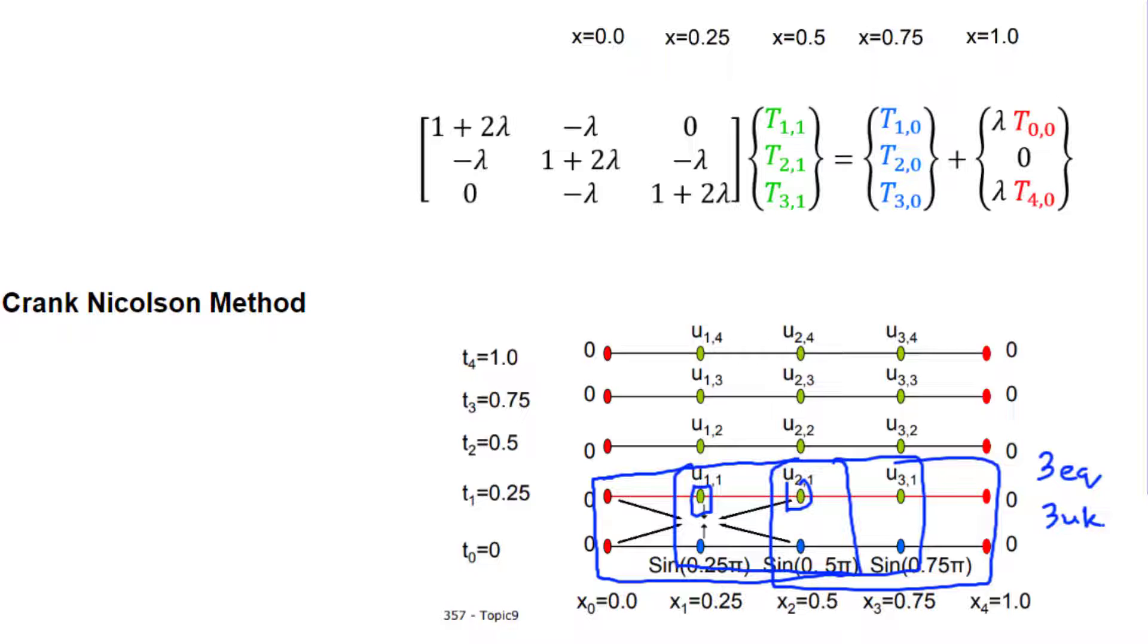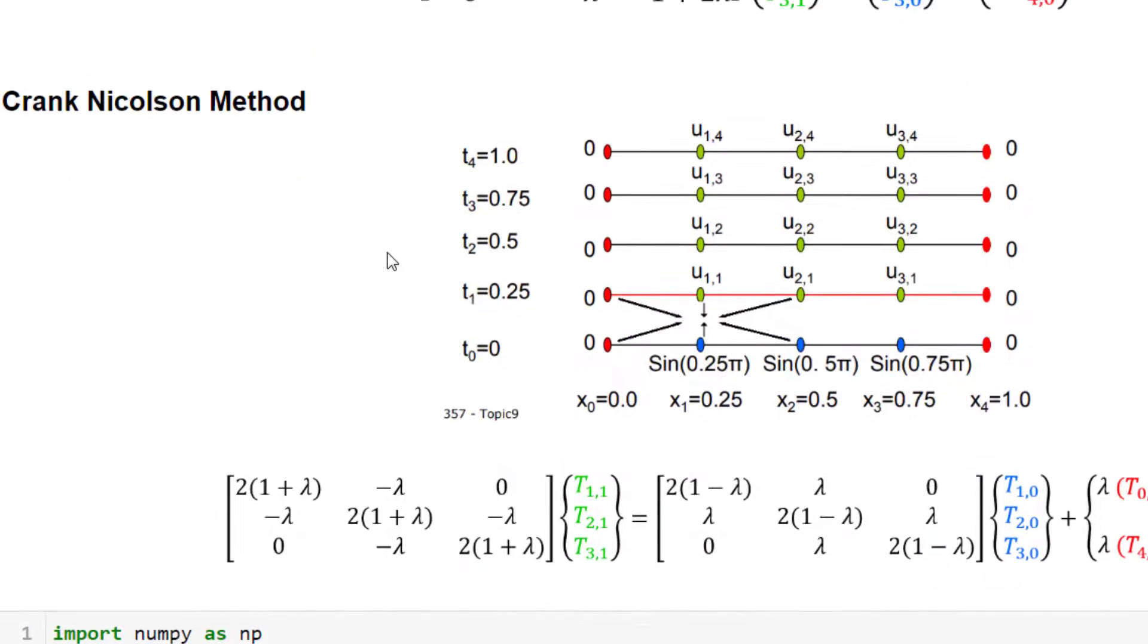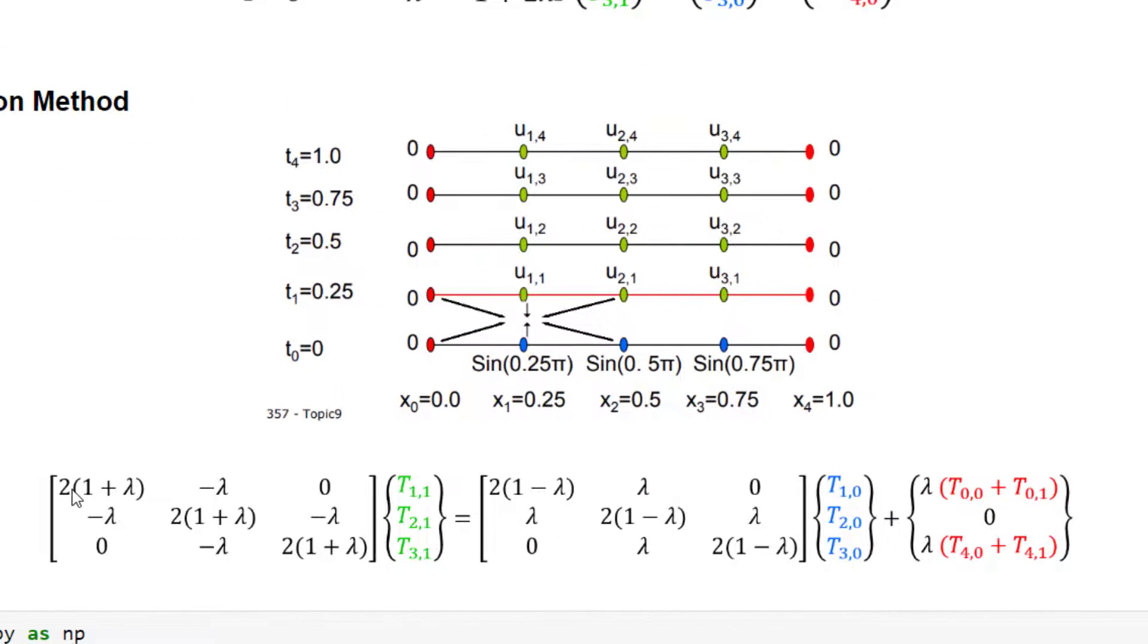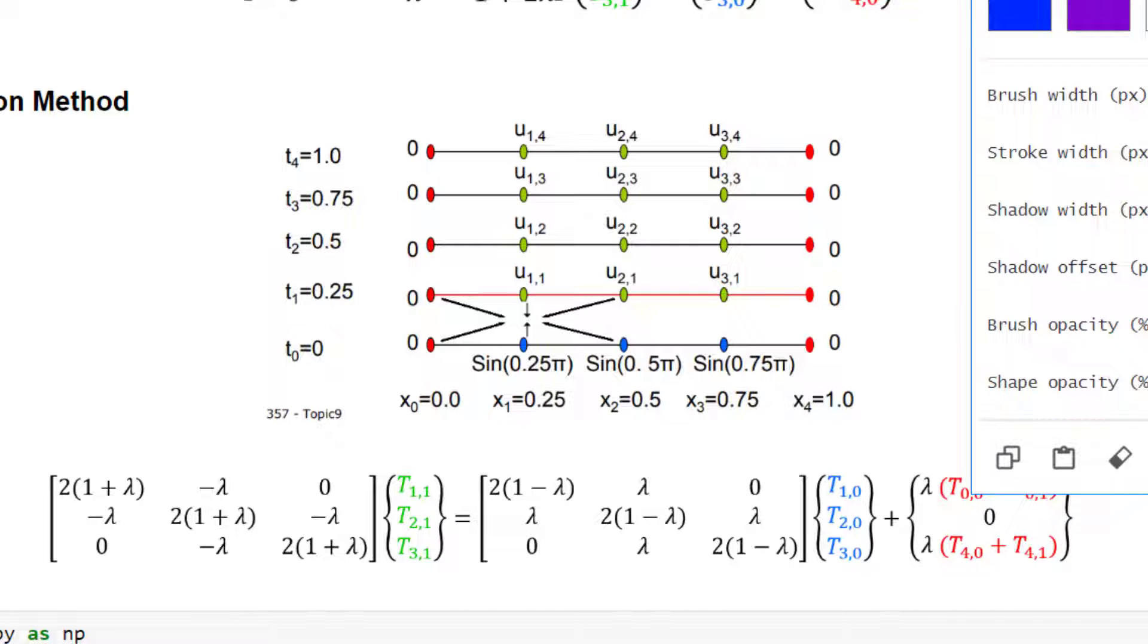The final matrix form of the equation is going to be like this. Again, we are solving for the unknowns, the green values. And it's just a matter of computing these matrices in Python. So let's see how to compute these in Python now.